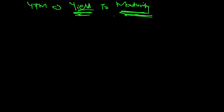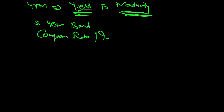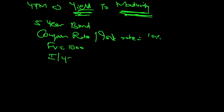Fund managers look for YTM before investing. Let us take an example of a 5-year bond giving a coupon rate, which is also called the interest rate, of 10%. The principal amount or future value is 1000. IY, which is the interest rate per year or the prevailing rate per year in the market, is 8%. This interest rate per year acts as the YTM — that is what we are going to see in this session.